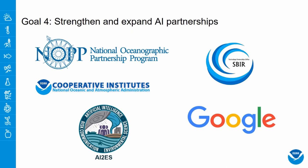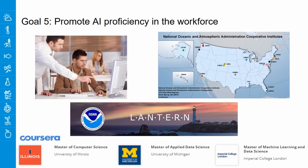We are partnering with academia and with the private sector, such as Google, Microsoft, NVIDIA, and Amazon, and others. The last goal is to assess training needs and create an online AI learning and support center, basically to promote AI proficiency in the workforce both internally and externally through different programs, partnering with academia, and advancing education programs to address AI needs.